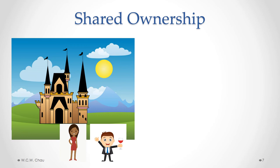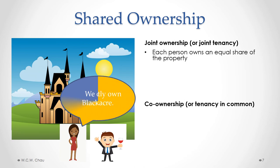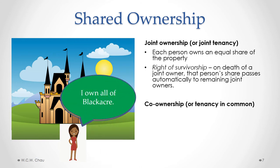If Claire and Igor want to own Black Acre together, there are two different ways of doing shared ownership. The first method is called joint ownership or joint tenancy. With joint ownership, each person owns an equal share — so Claire and Igor would each have an undivided 50% share. With joint tenancy, there is a right of survivorship: on the death of one joint owner, that person's share passes automatically to the remaining joint owner. So if Igor dies, Claire would automatically become the sole owner of Black Acre.